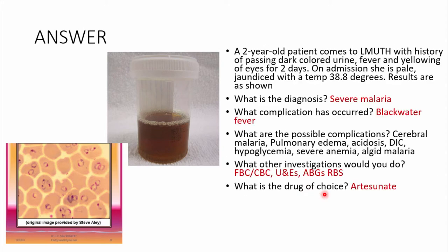Most likely this child has severe malaria. Whenever someone comes in with fever — especially in a tropical area where malaria is present — along with yellowing of the eyes and dark urine, you should suspect malaria. The complication this child has come in with is blackwater fever.